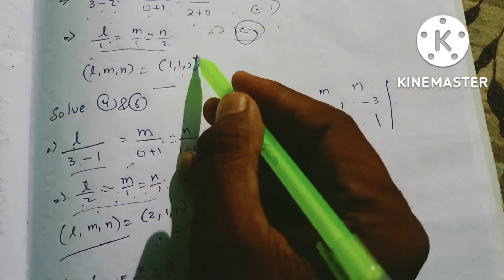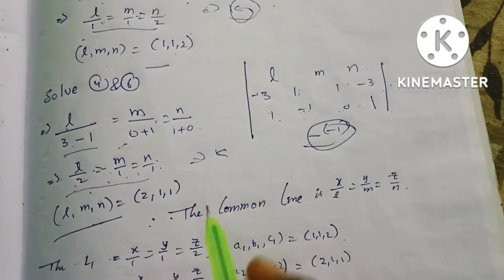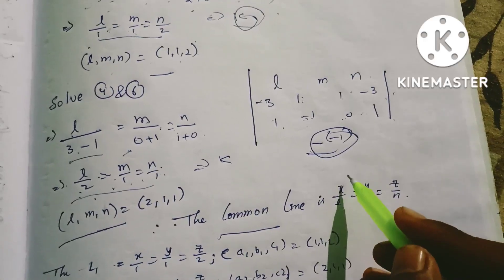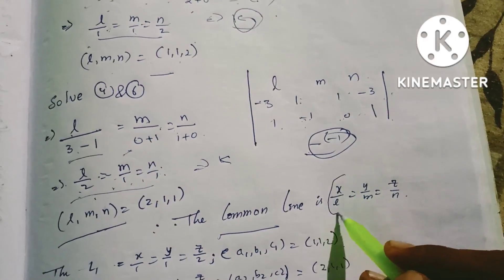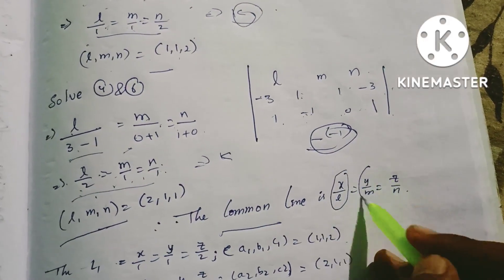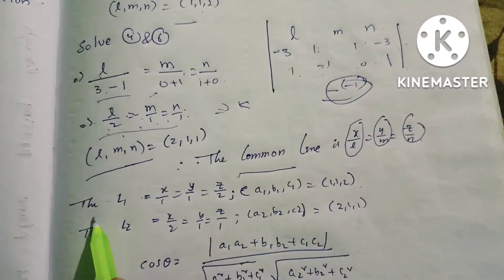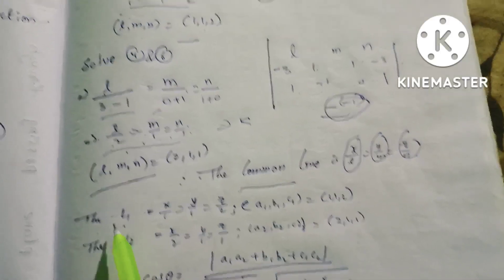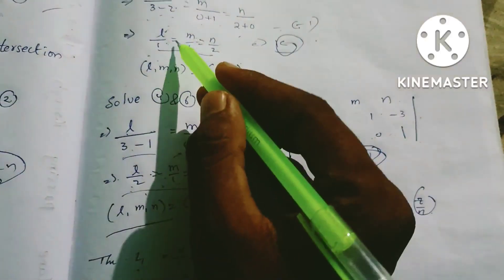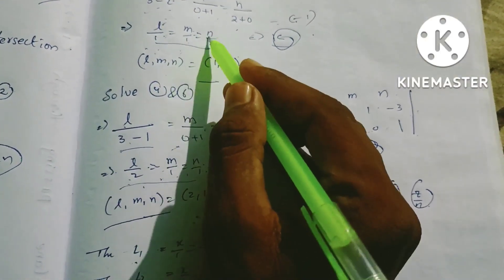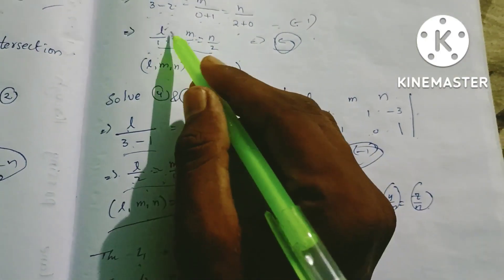So we have two lines of intersection. The first line L1: x/1 = y/1 = z/2, with direction ratios (a1, b1, c1) = (1, 1, 2). The second line L2: x/2 = y/1 = z/1, with direction ratios (a2, b2, c2) = (2, 1, 1).